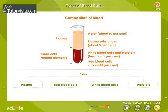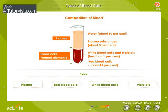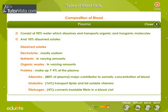Blood is composed of four major components: plasma, red blood cells, white blood cells and platelets. About 55% of blood is plasma, and about 90% of plasma is water. Plasma also contains vitamins, minerals, nutrients, proteins and waste products.